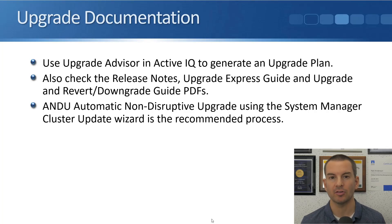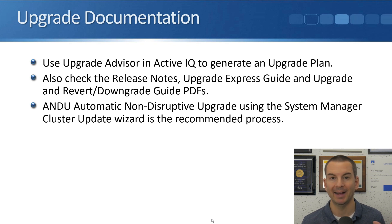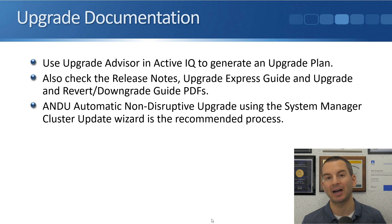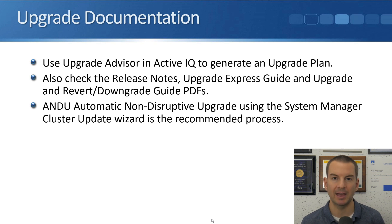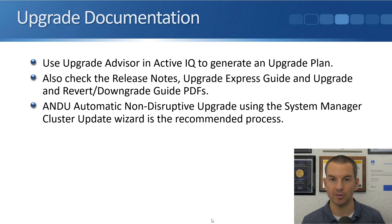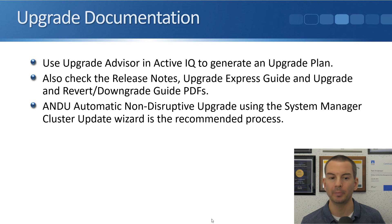Doing an upgrade is obviously a fairly major process on your storage system, so you want to make sure you've got everything lined up before you go ahead. You want to check all of the relevant documentation. First, use Upgrade Advisor in Active IQ to generate an upgrade plan — that's documentation in PDF or Excel format that takes you through step-by-step the upgrade process for your particular system. Also check the release notes for the version of ONTAP you're upgrading to, and there's also the Upgrade Express Guide and the Upgrade and Revert Downgrade Guides, which are also PDFs.